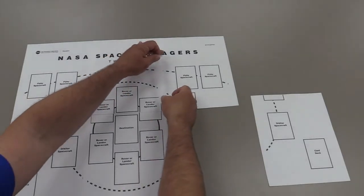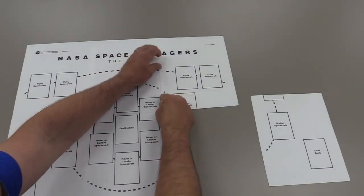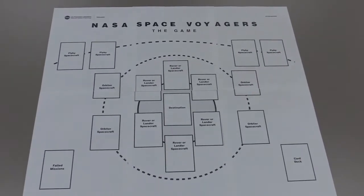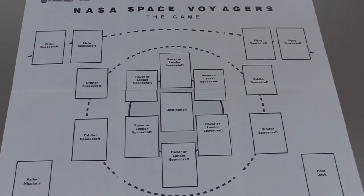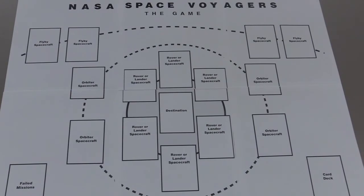The game mat can be assembled by taping the sheets of paper together along the dotted lines. The mat includes a place for your deck, your discard pile, and your spacecraft as they come into play.